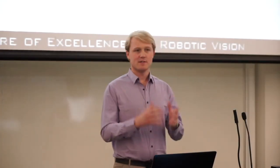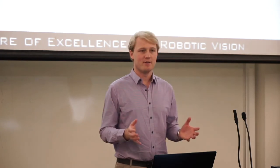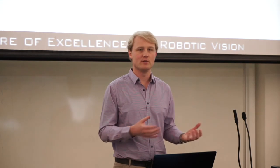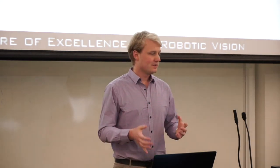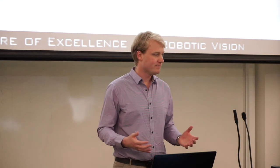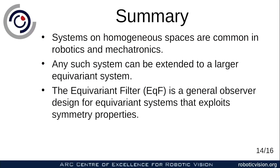To summarize: systems on homogeneous spaces are everywhere in robotics and mechatronics, and traditional observer designs — especially things like the extended Kalman filter, which linearize about an evolving state estimate — don't work very well in these situations. What we show in this paper is that any system on a homogeneous space can be extended to a larger system which is equivariant. Using that, we've designed the Equivariant Filter, the EQF, as a general observer design that takes advantage of the symmetry properties of homogeneous spaces, while still defining the observer error as a member of the homogeneous space, not a member of the Lie group.